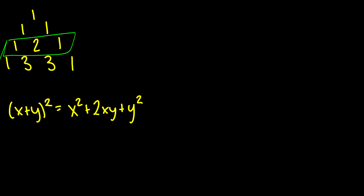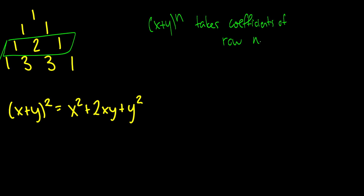Formally, (x + y)^n takes the coefficients of row n+1 of Pascal's triangle. So row 0 is the first row, row 1 is the second, row 2 is the third, row 3 is the fourth, row 4 is the fifth. So (x + y)^2 takes row 3. Here's a question: what are the coefficients of (x + y)^6?